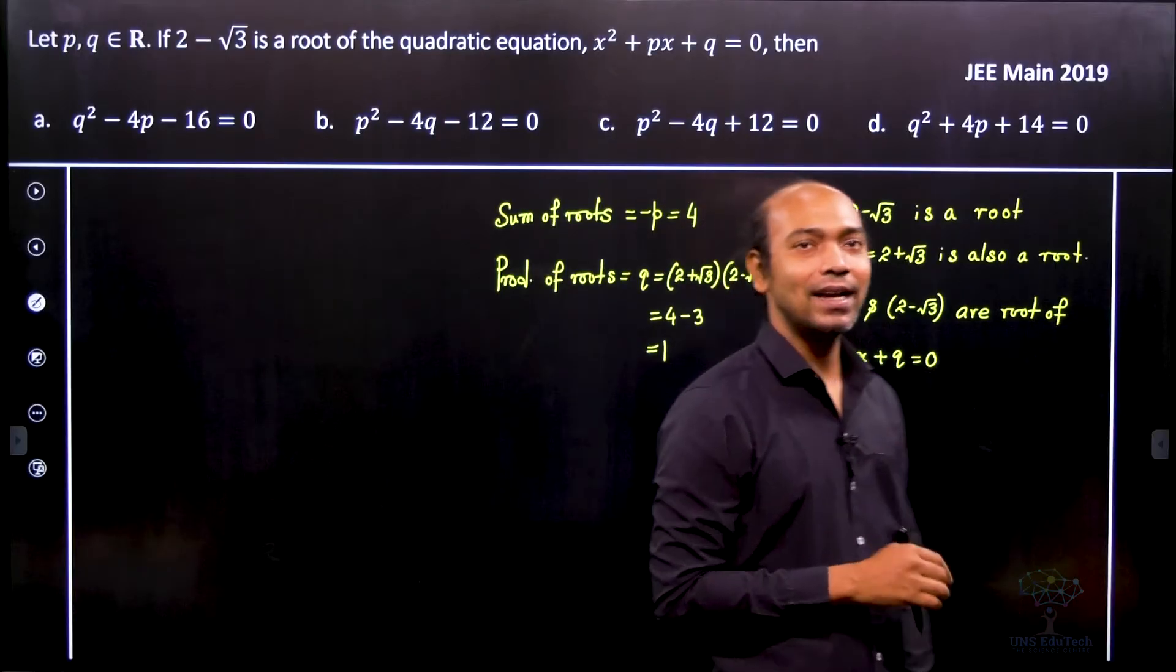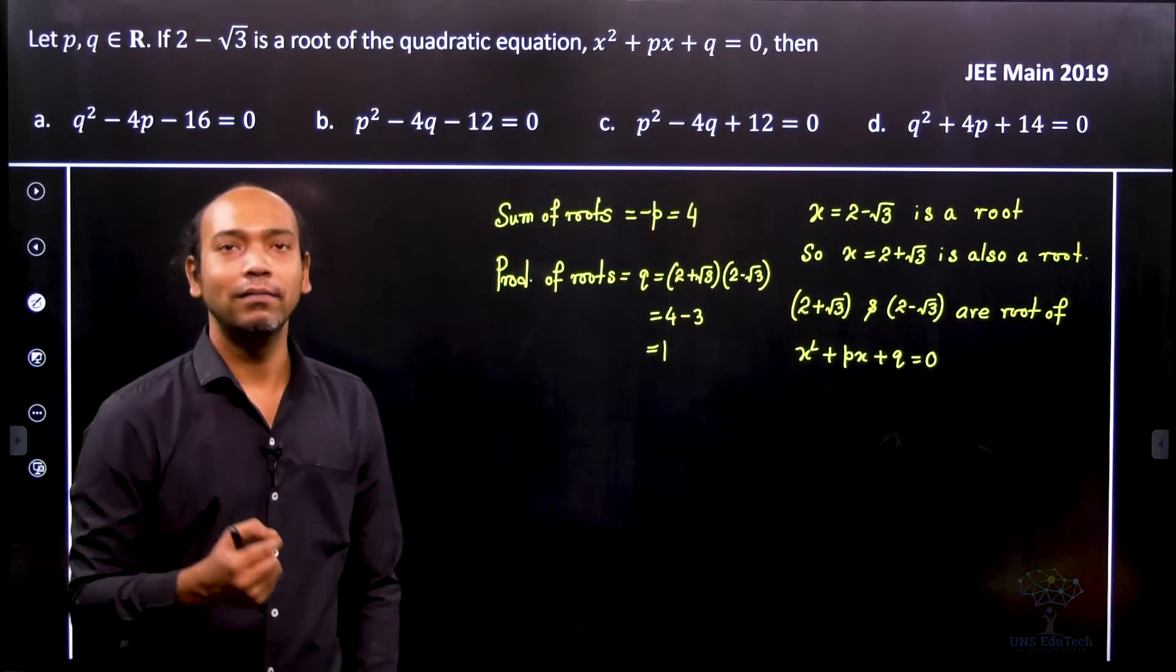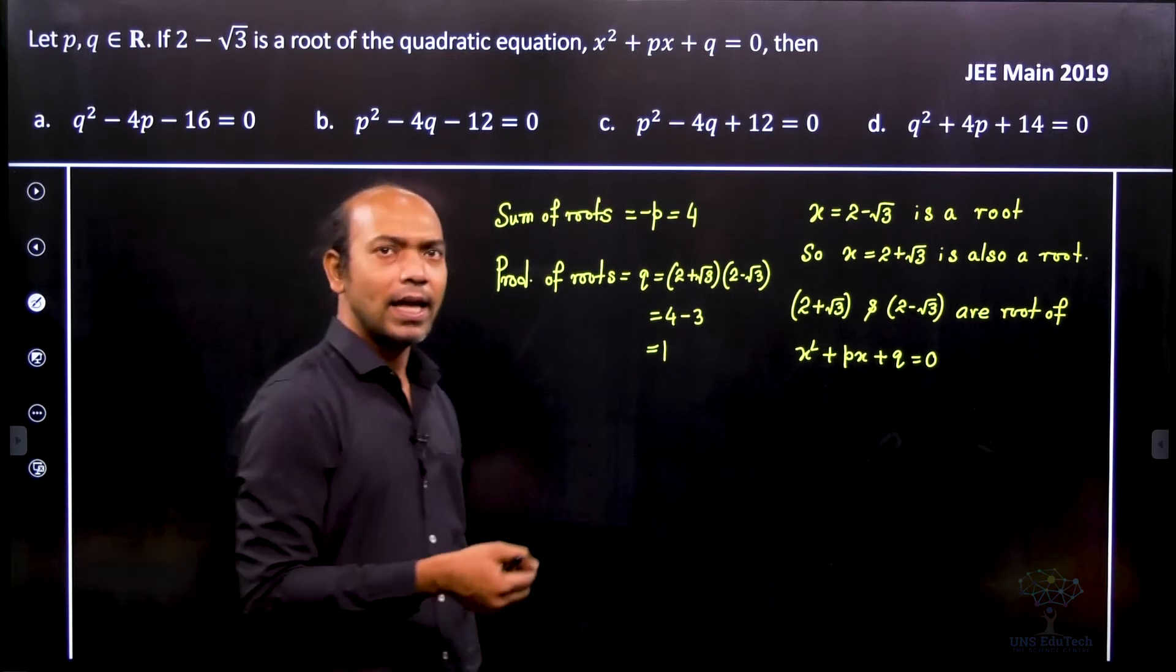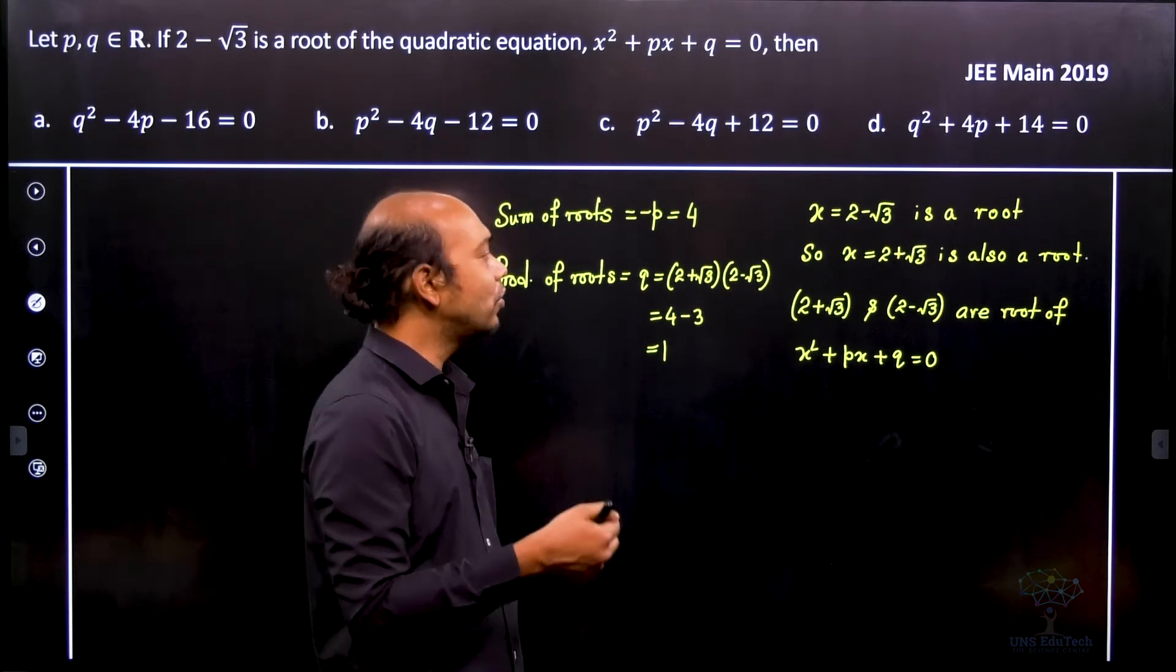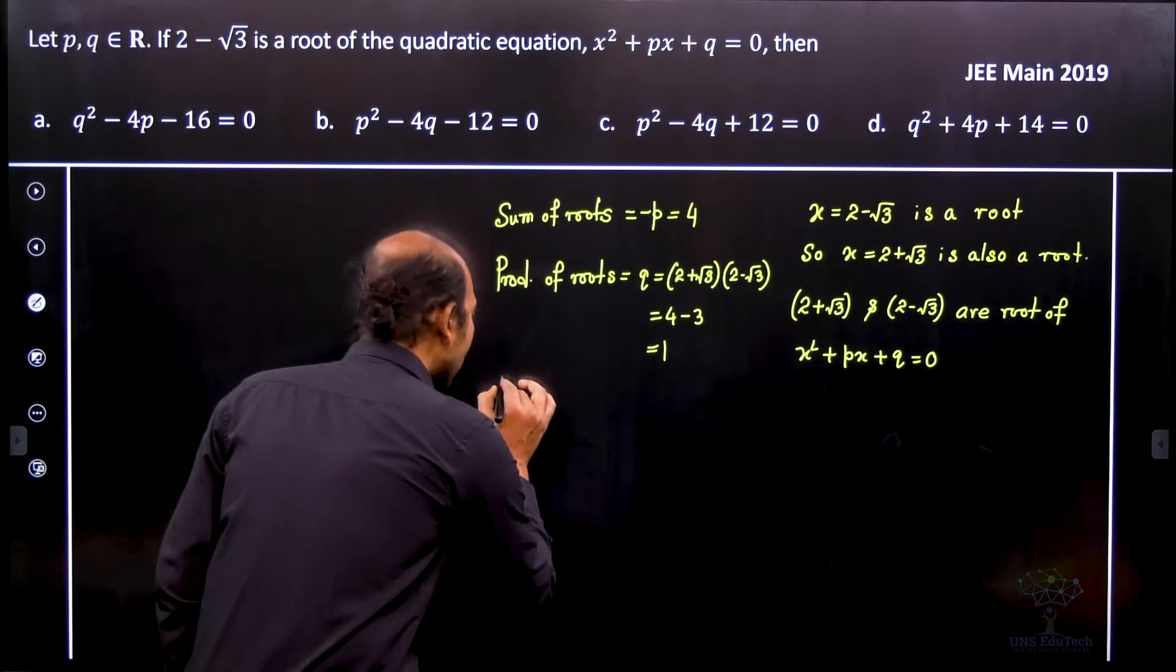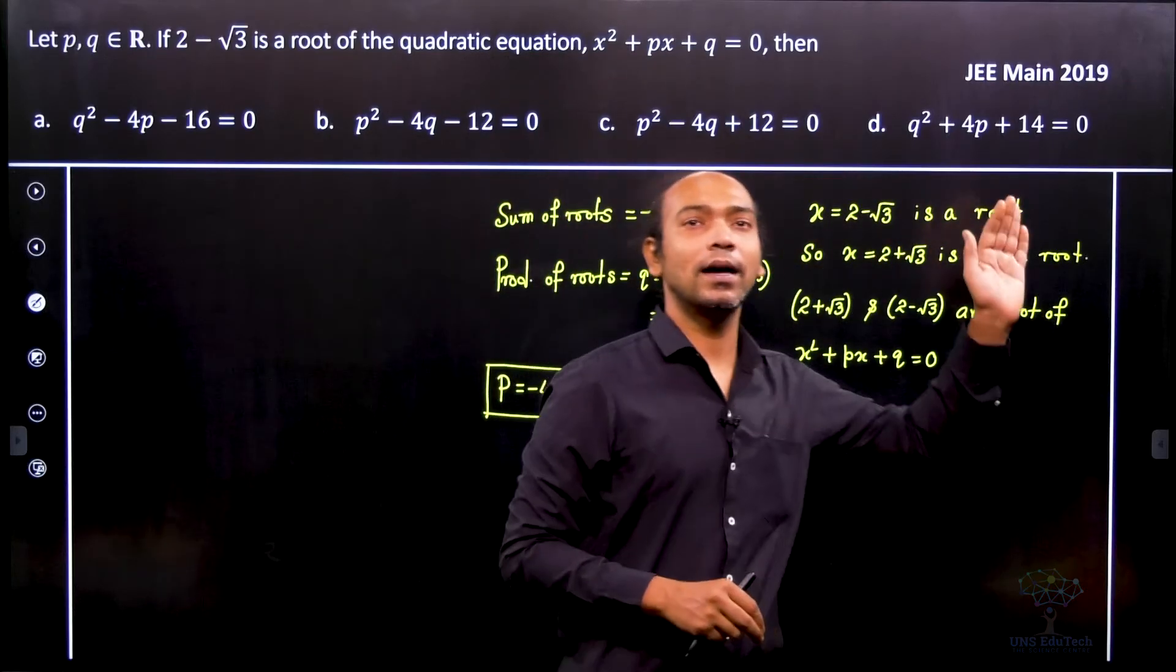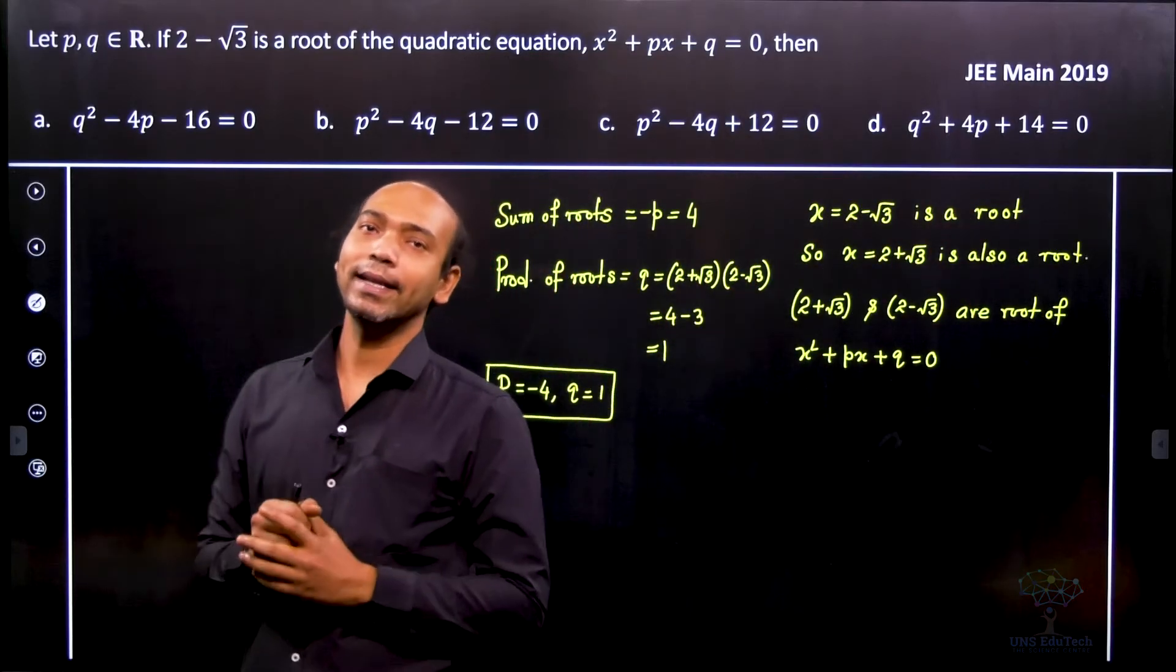So therefore we'll see that p equals minus 4 and q equals 1 are the required values. So now if I go ahead and try to find out the solution, we can see that for this problem p equals minus 4 and q equals 1, and that's it. Now whenever we obtain this we just substitute appropriately in the given options and we can calculate that.